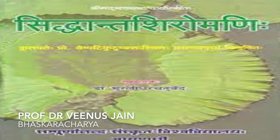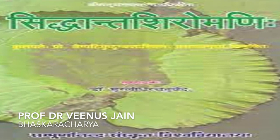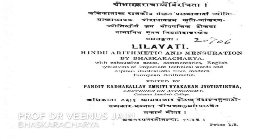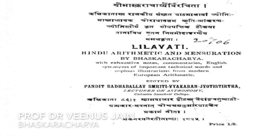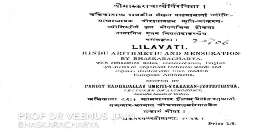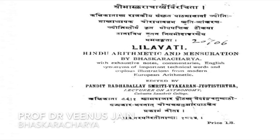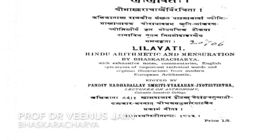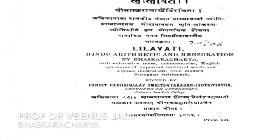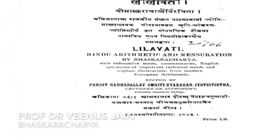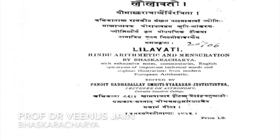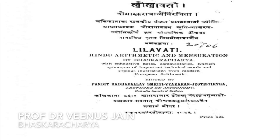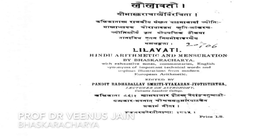Siddhant Shiromani is divided into four parts. The first is Leelavati, named after his daughter, and consists of 277 verses. It covers calculations, progressions, measurement, permutations, and many other topics.